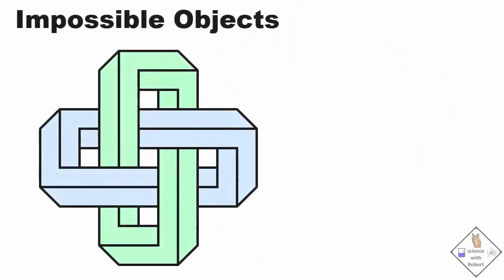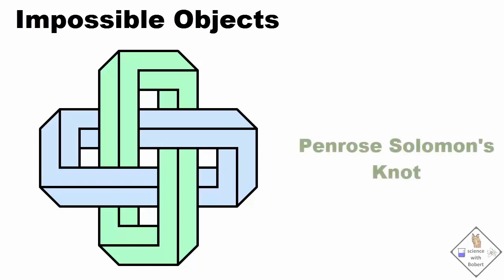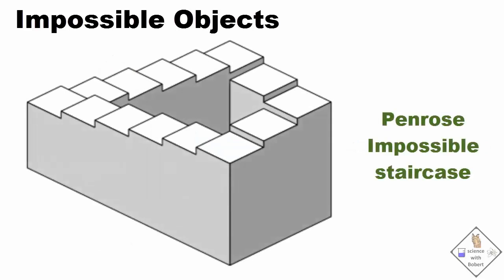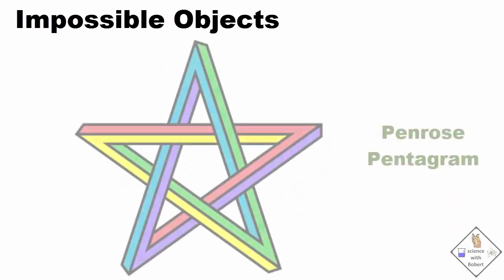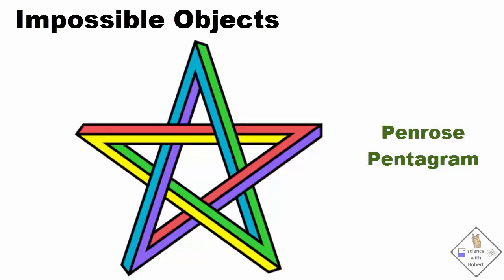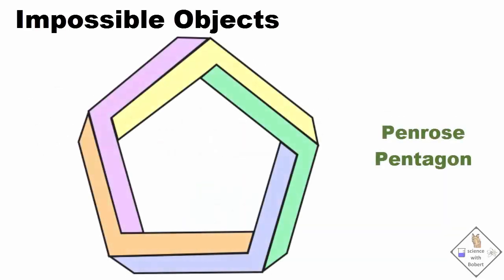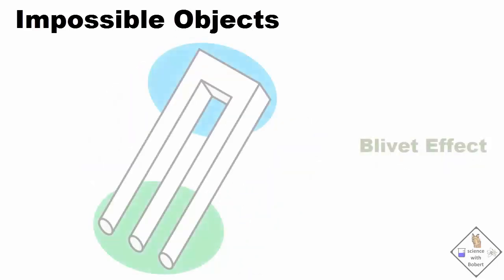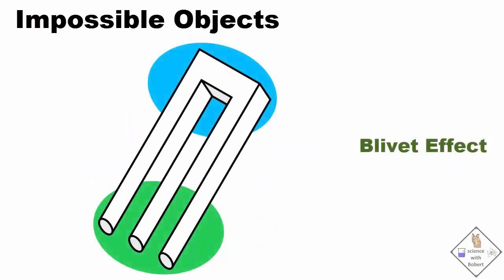Here are some impossible objects. They cannot exist as a solid. This is called a Penrose Solomon's Knot. The Penrose Impossible Staircase. The Penrose Pentagram. The Penrose Pentagon. This impossible object is referred to as the Blivet effect.